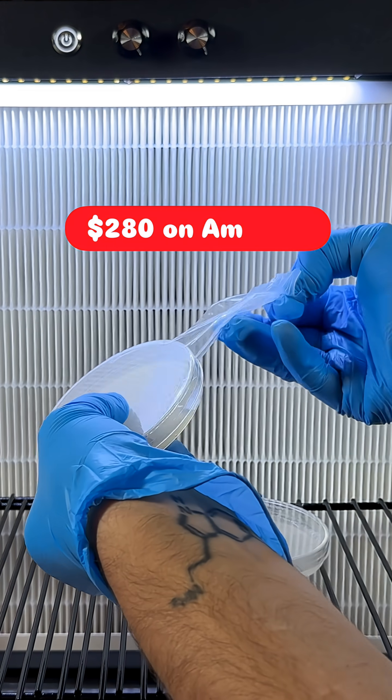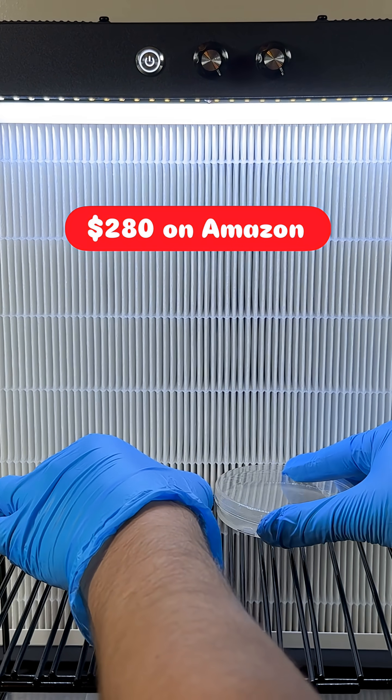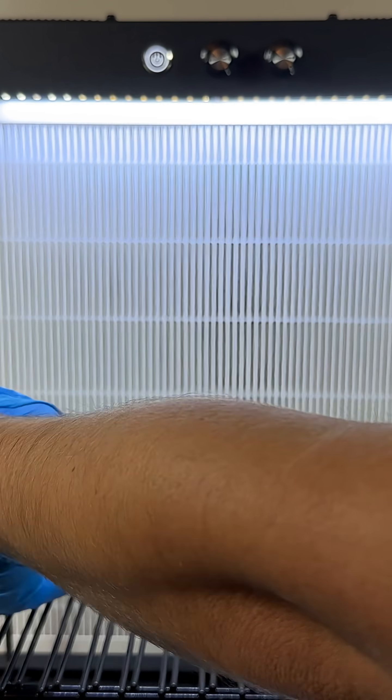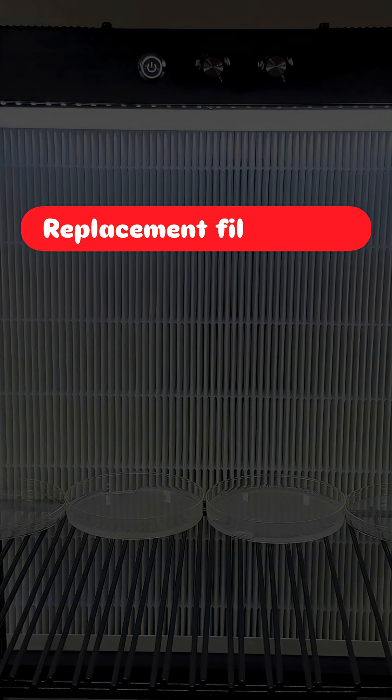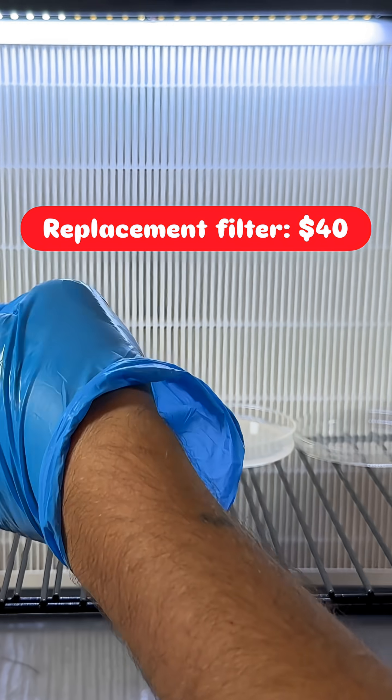The flow hood is priced competitively at $280 on Amazon and you can get 5% off by using the code Spore and Sprout. Replacement filters cost about $40 and I recommend swapping them out every six months depending on usage.